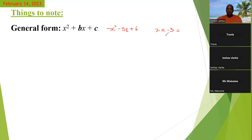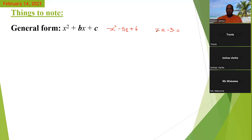Ms. Travia? Yes, sir. So Ms. Travia is walking us through this question. She gave me the two factors of two times negative three. So I was asking her now, if you multiply two times negative three, what the result would be? Ms. Travia, what would you actually get? Oh, sir, we're going to get a negative six.